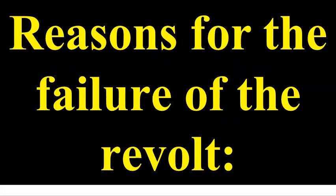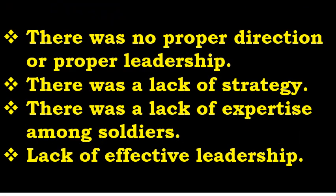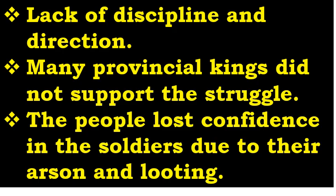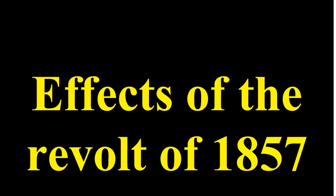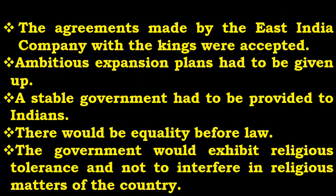The reasons for the failure of the revolt is a very important question — all 8 to 9 points you must learn. The struggle aimed to protect the interests of a few rather than gaining freedom for the country. It was not an organized struggle. There was a lack of unity among Indian soldiers, no proper direction or leadership, lack of strategy, lack of expertise, and lack of effective leadership. Effects of the 1857 revolt: the freedom struggle put an end to the East India Company and administration was taken over by the Parliament. There are about 9 to 10 points — this question is for four marks.